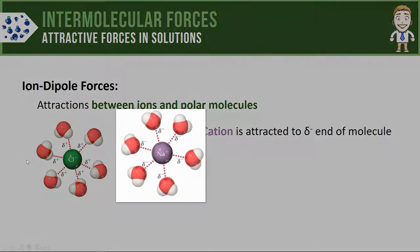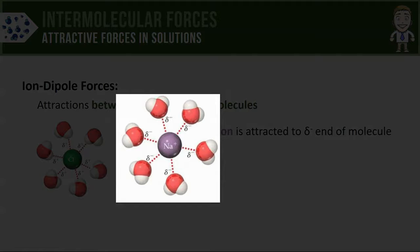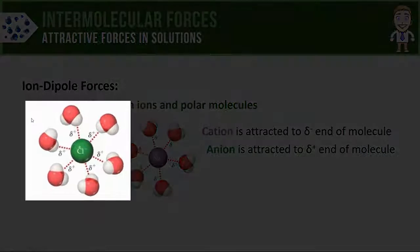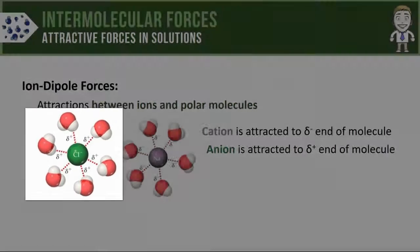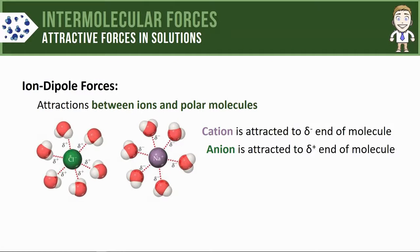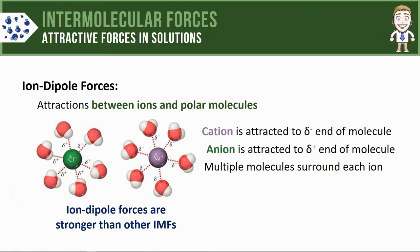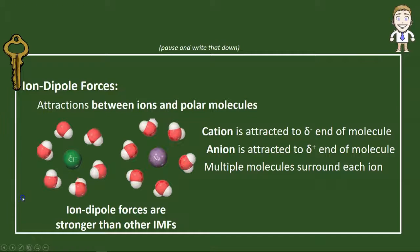Here are some things to notice about these models. The cation in purple is positive, so it's attracted to the partially negative end of the molecule. The green anion is negative, so it's attracted to the partially positive end of the molecule. Also notice that there are multiple molecules surrounding each ion — that's common for this type of attraction, especially when it comes to solution formation. In terms of relative strength, ion-dipole forces are stronger than the other intermolecular forces.